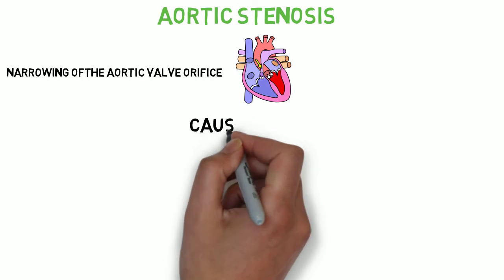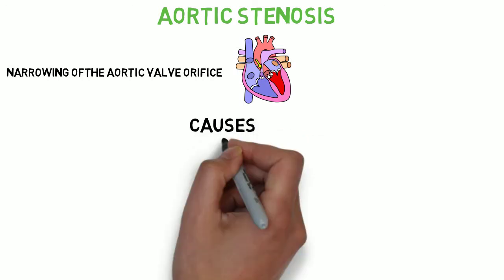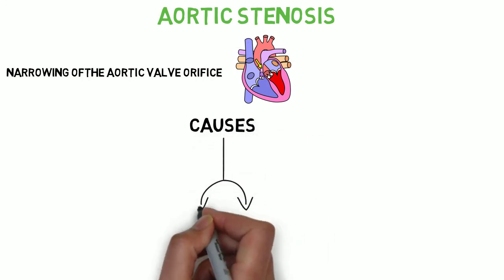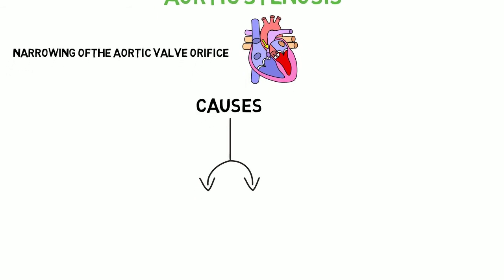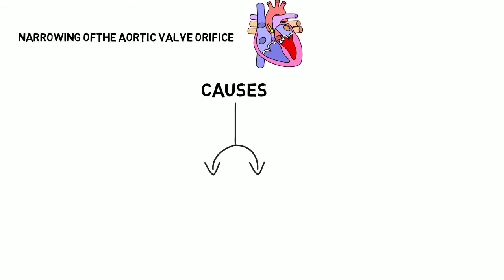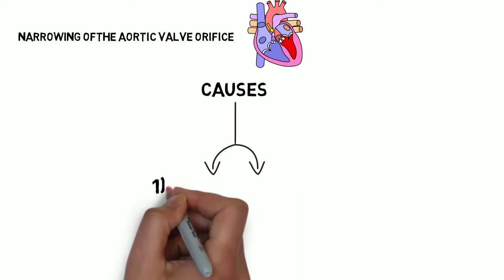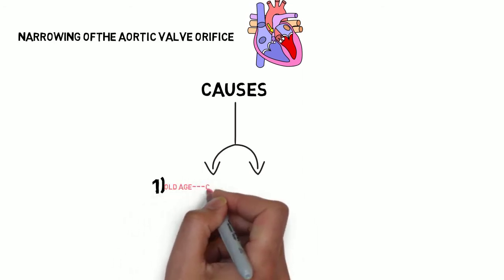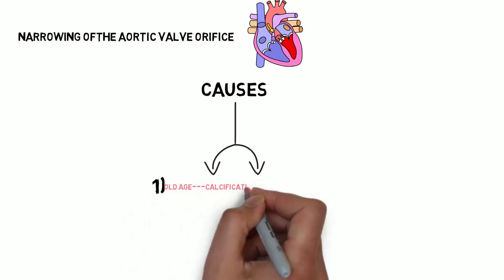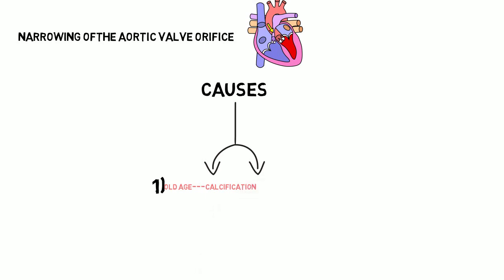Now let's discuss the causes of aortic stenosis. There are two scenarios: old age and young adults. In the case of old age, aortic stenosis is mainly due to calcification — an age-related phenomenon in which there is deposition of calcium over the valve, leading to fibrosis and eventually thickening and stenosis of the valve.